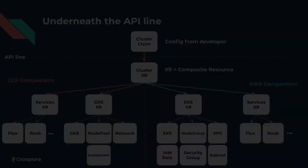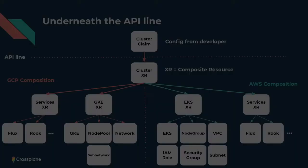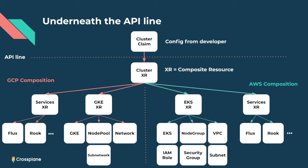Here's a diagram of the composition hierarchy. At the top, the developer interacts only with a simple cluster object — they're making a claim on a cluster. Beneath the API line, there's a whole hierarchy of composite resources and compositions. Underneath the cluster composite resource, there are two compositions: one for GCP made up of a GKE composite resource and a services composite resource, and further below those are lower-level GCP resources and Helm charts for the various landscape projects. All this complexity stays beneath the API line — developers don't have to worry about it.